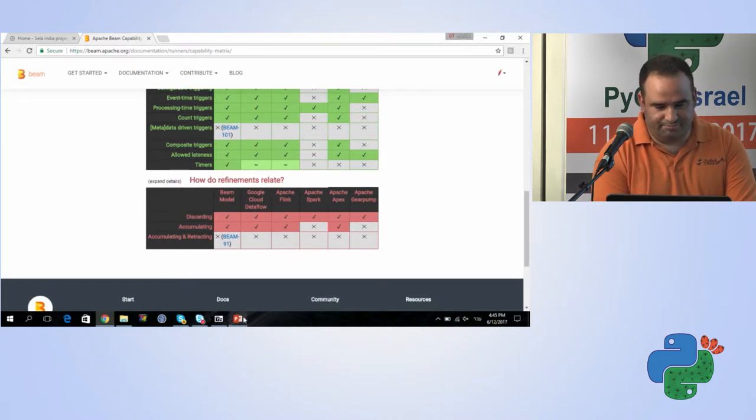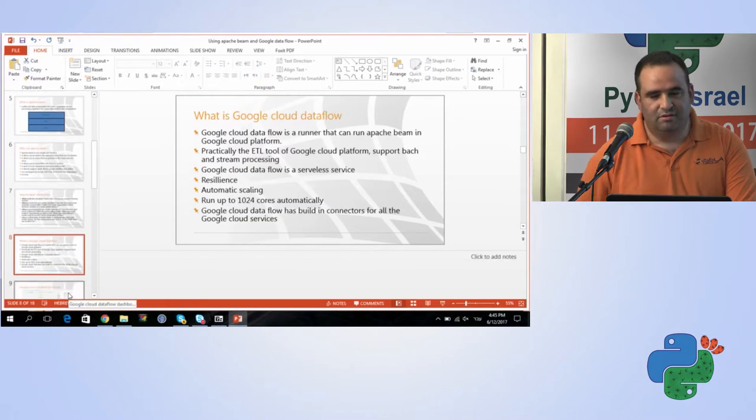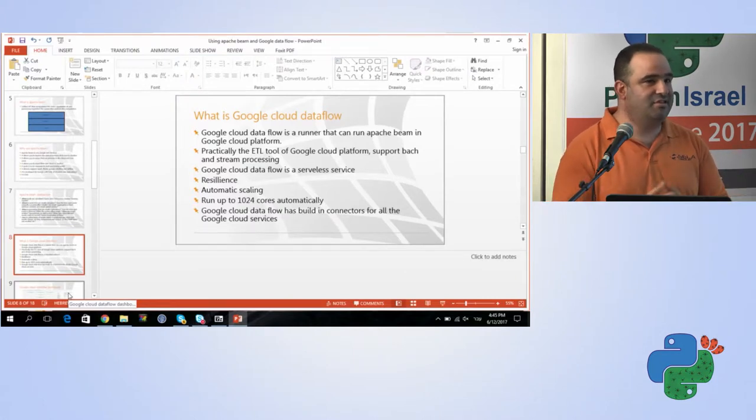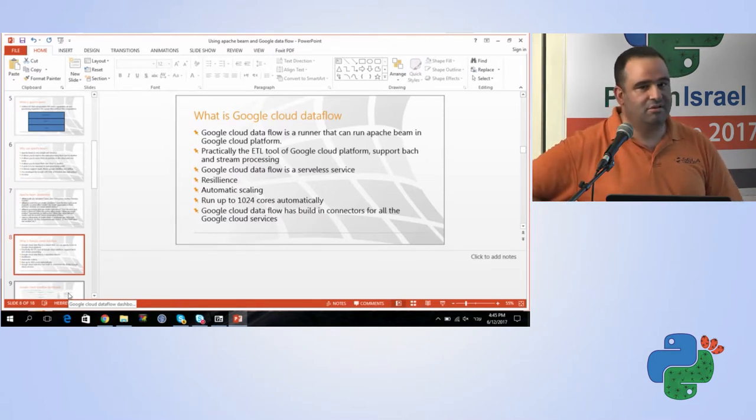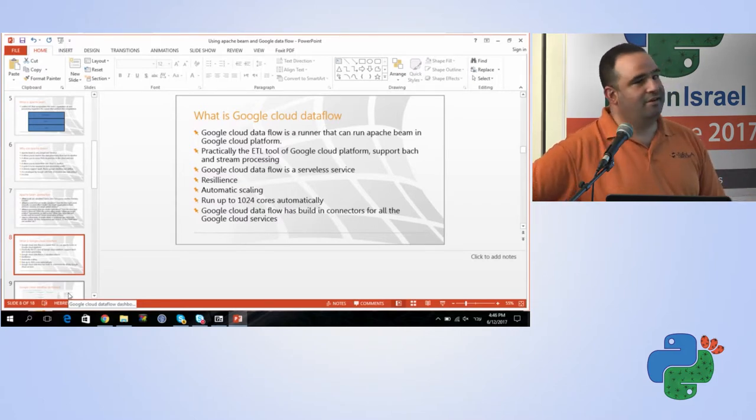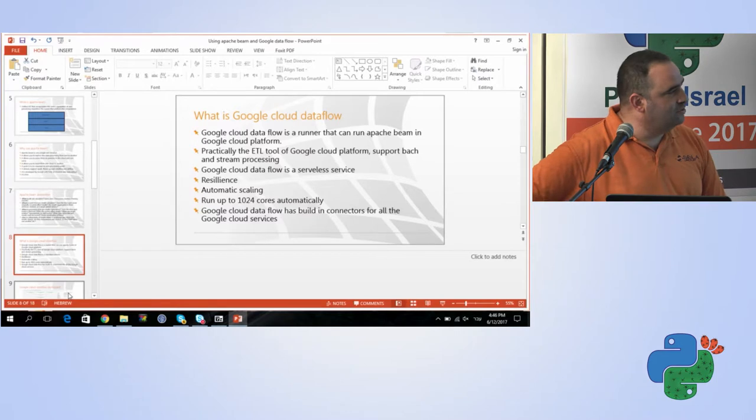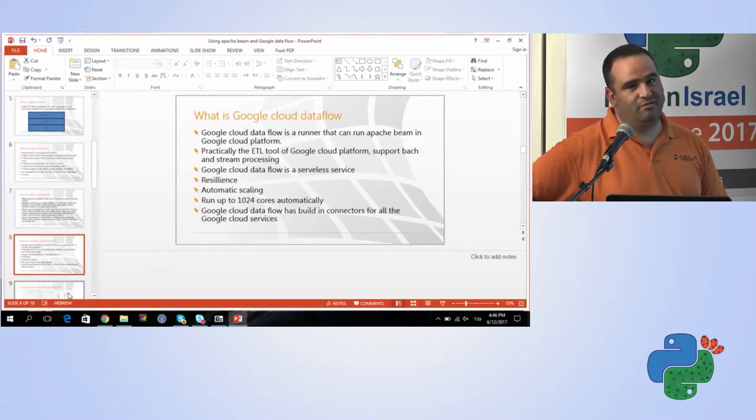Okay, let's move on to Google Cloud Dataflow. So Google Cloud Dataflow is actually a service in the cloud of Google that you can write code in Java, or now also in Python, that fit to Apache Beam, and performing your data processing in the cloud. It's practically the ETL tool for Google Cloud Platform. Every data they need to move from one place to another. Google Cloud Dataflow, it's a great place to do it. And it's a serverless technology. You don't need to define any servers.